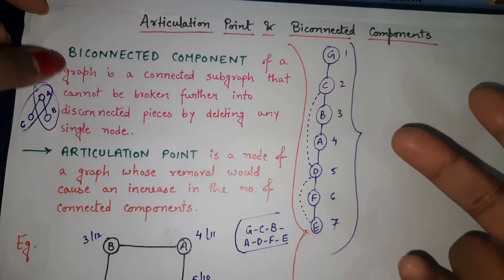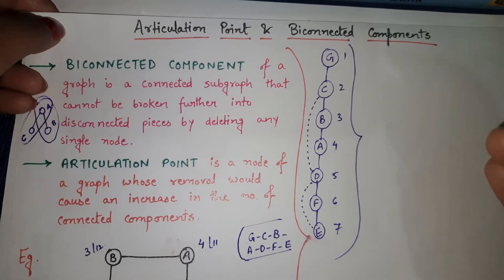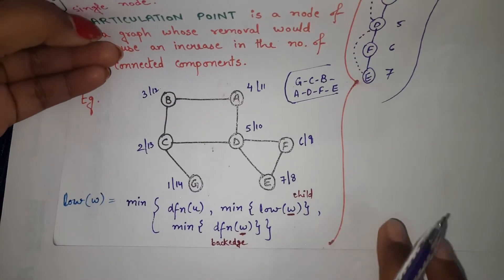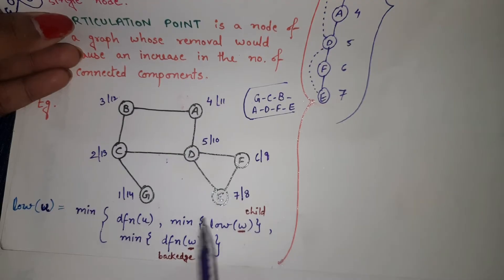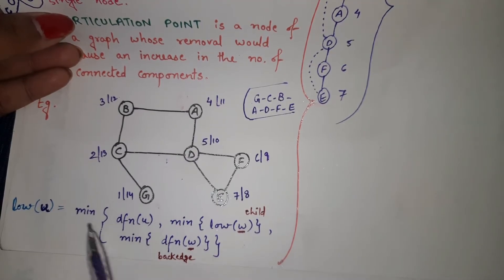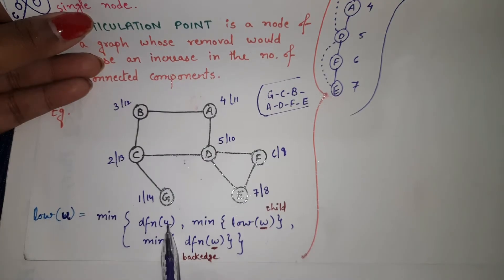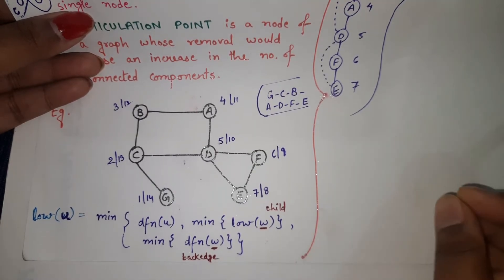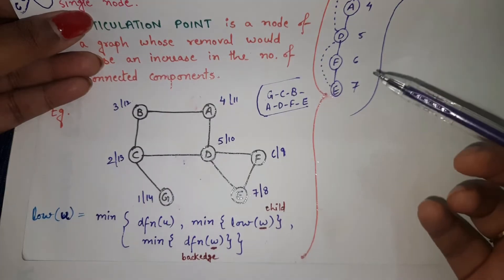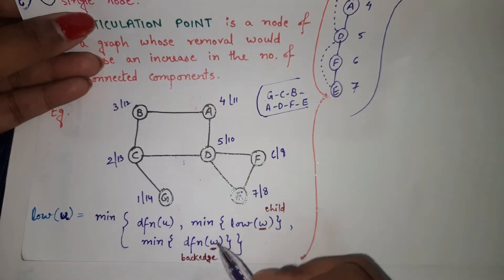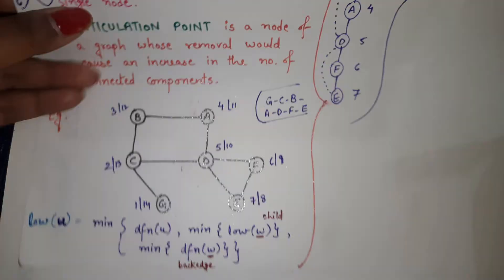The second major step is to find out the LOW value for all nodes. The formula is: LOW(u) = min of three parameters — DFN(u), min of LOW(w) where w is a child of u in the tree, and min of DFN(w) where w is connected to u by a back edge. Whichever value is minimum across these three parameters is your final LOW value. It is preferable to start finding LOW values from the leaf node.